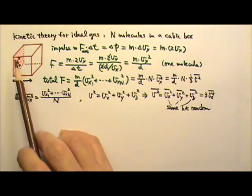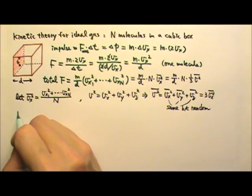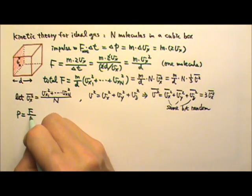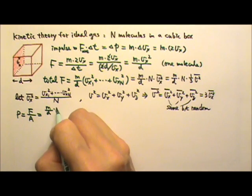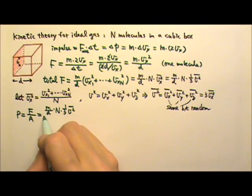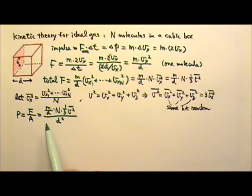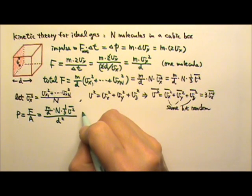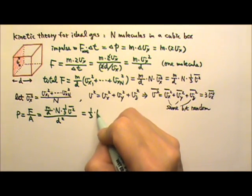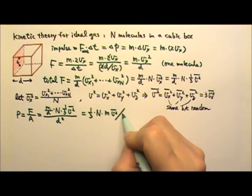Now we have the force on this face of the box from all the molecules colliding with it. We can find the pressure by dividing force by area. The force is m over d times n times one third times the average speed squared, divided by the area of the face, which is d squared. That gives us divided by d cubed, and d cubed is the volume of the box. So pressure equals one third times n times m times average v squared divided by the volume.